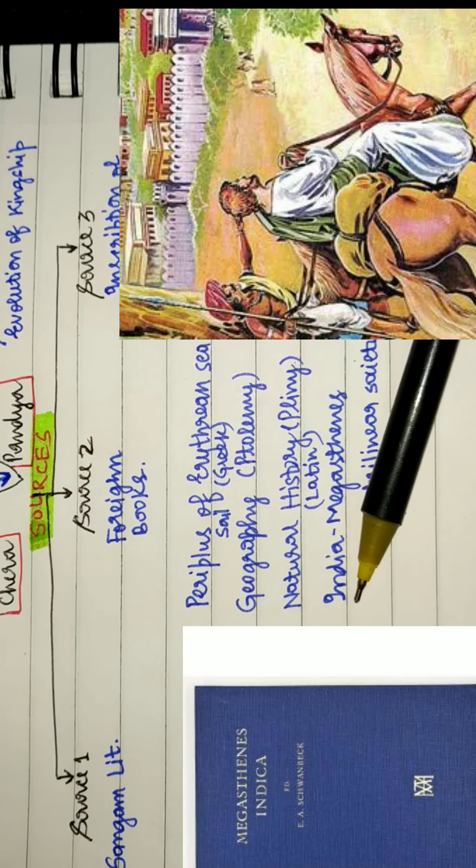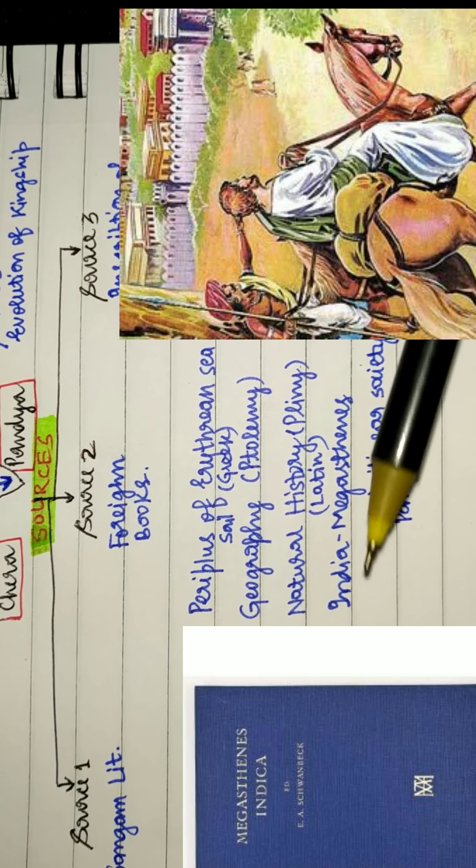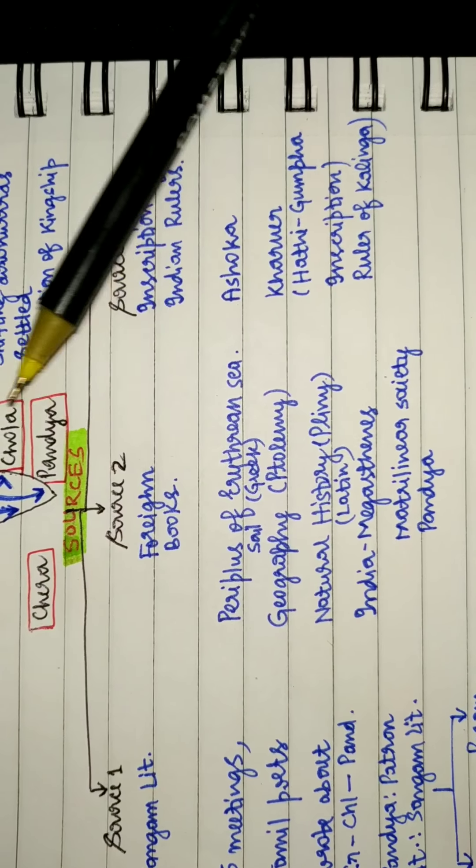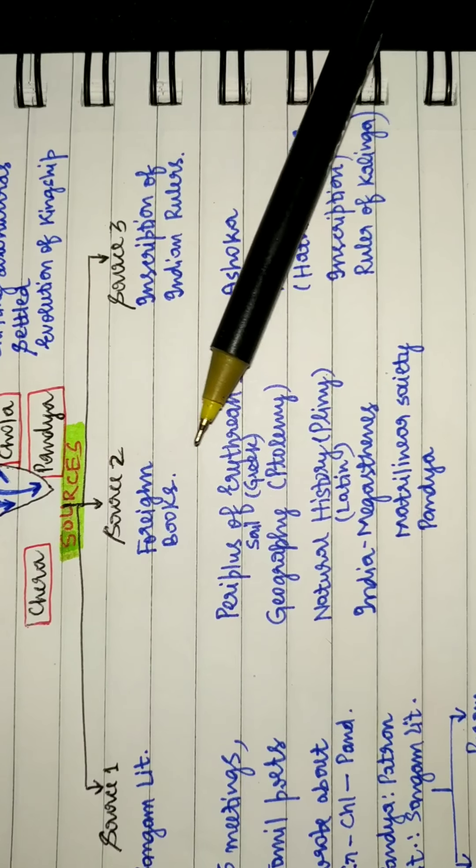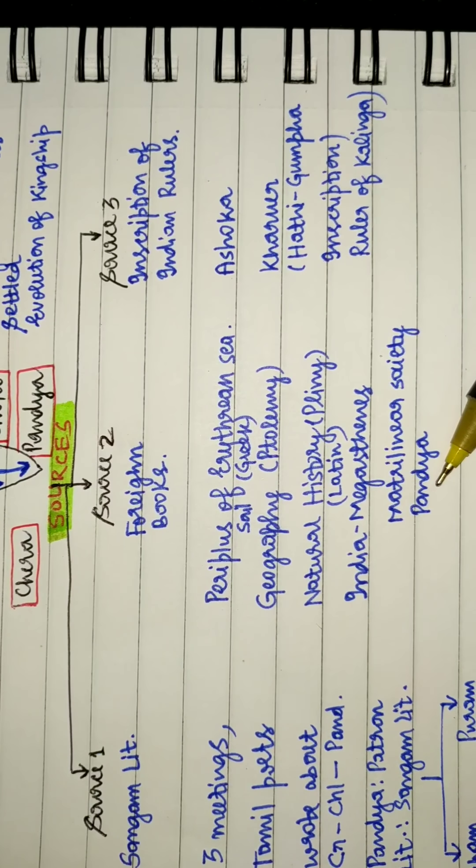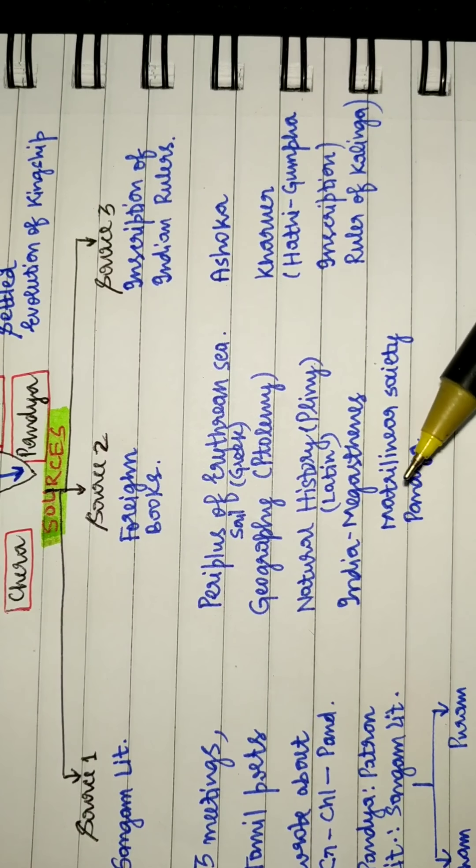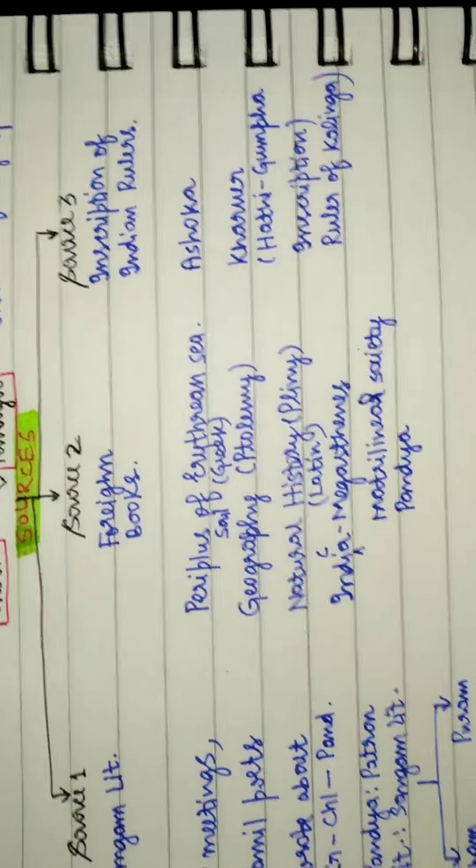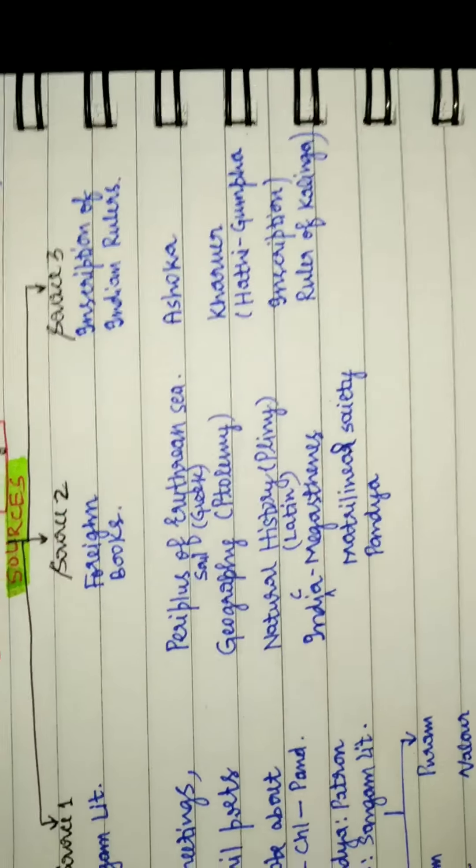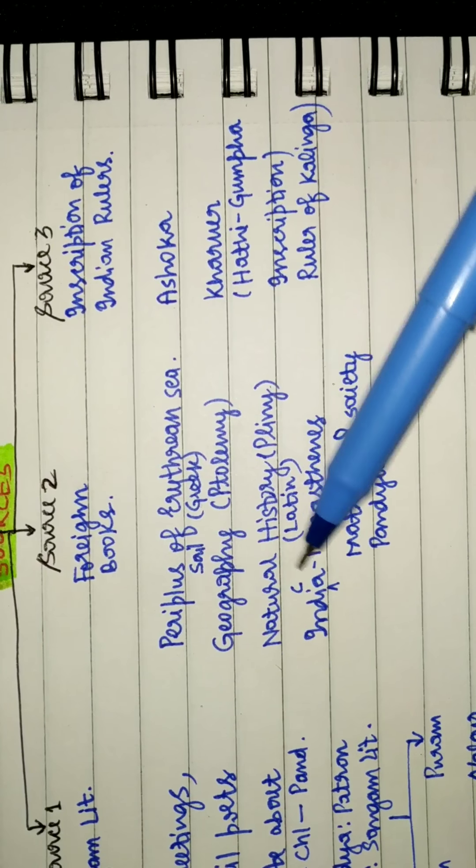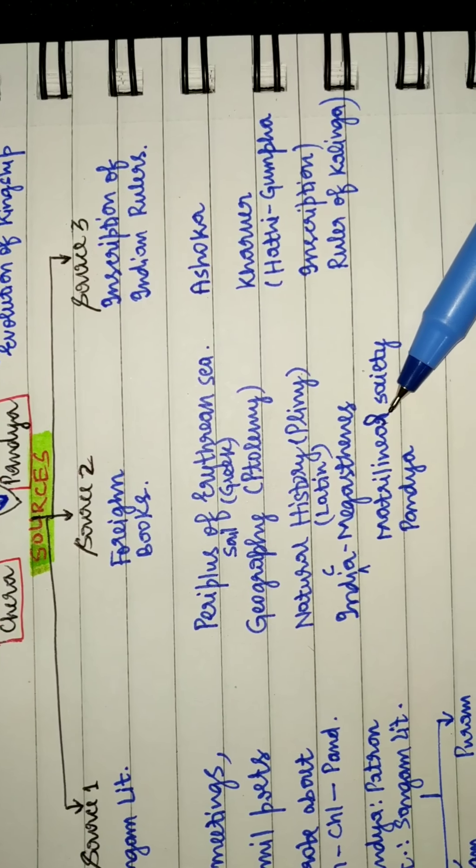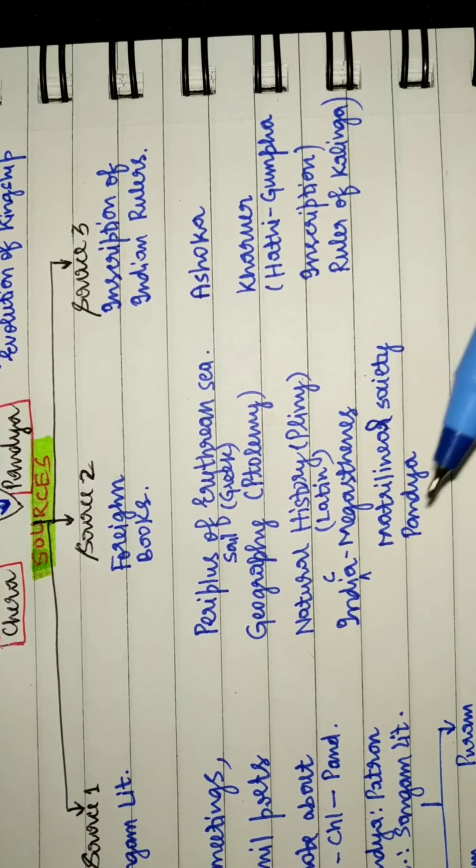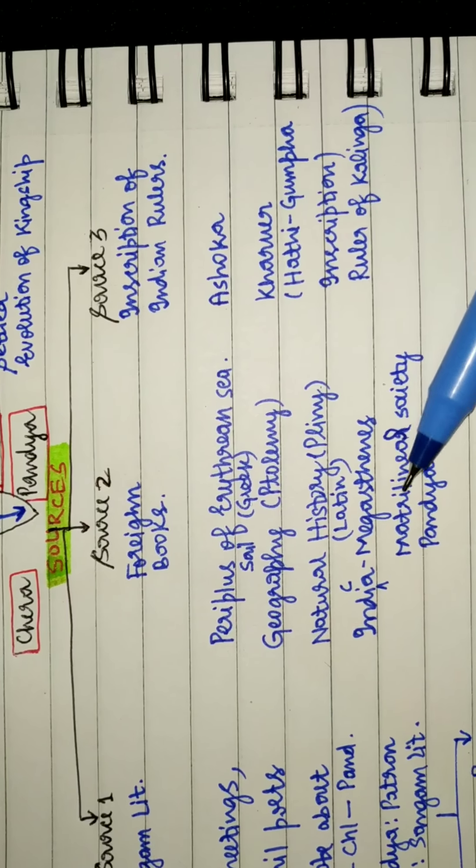Indica written by Megasthenes. Again we find Chera, Pandya, and Chola. He also mentions how the Pandya society was a matrilineal society.